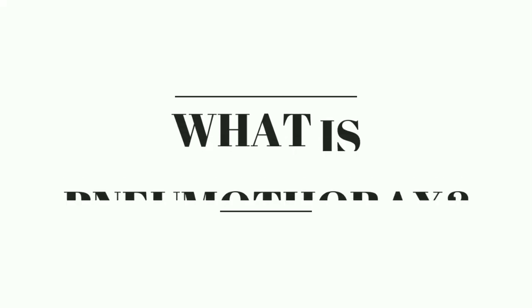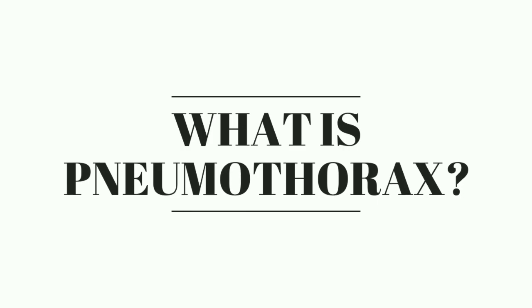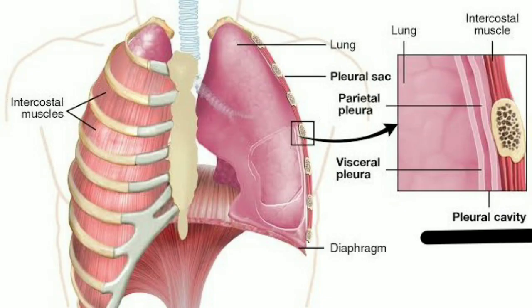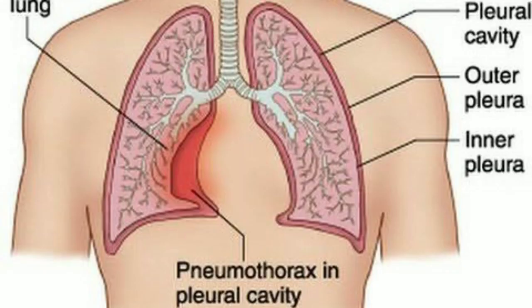So what is Pneumothorax? Pneumothorax is the collection of air in the pleural cavity that leads to partial or complete lung collapse. When the amount of air between the parietal and visceral pleura increases, there is an increase in the tension of the pleural cavity, which will slowly lead to lung collapse.